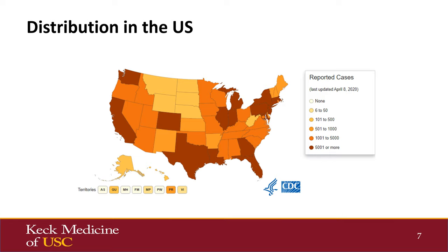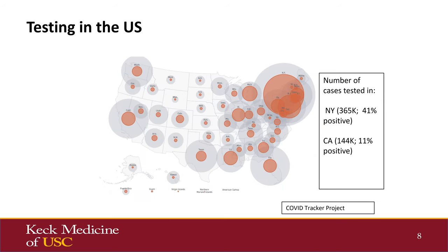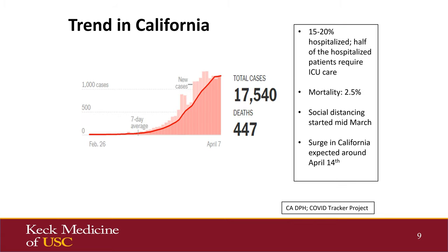The distribution shows a lot of activity in New York, New Jersey, Connecticut, Michigan, Washington State, and California, as depicted on this map. The incidence of the disease at this time seems to be very driven by the number and availability of tests in different areas. In New York, around 365,000 tests have been done with a positivity rate of 41%. For California, approximately 145,000 tests have been done with a positivity rate of 11%.